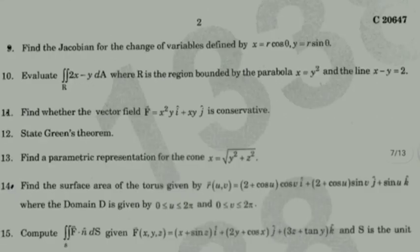Find the Jacobian for the change of variables defined by x = r·cos(θ), y = r·sin(θ). The Jacobian is an important concept in multivariable integrals and triple integrals — dealing with dimensions and coordinate transformations.